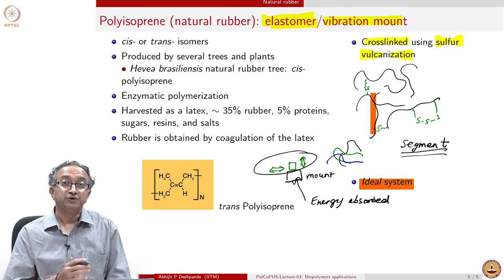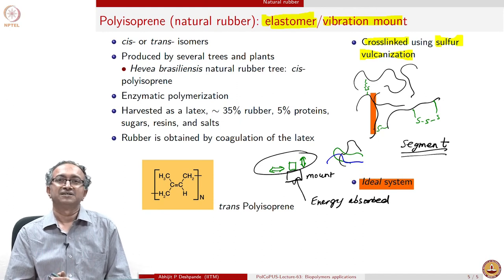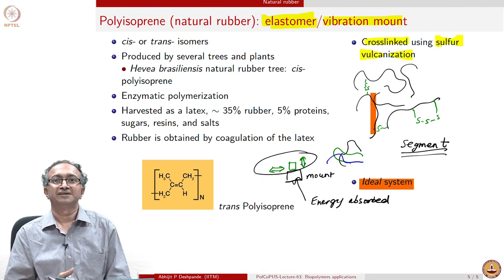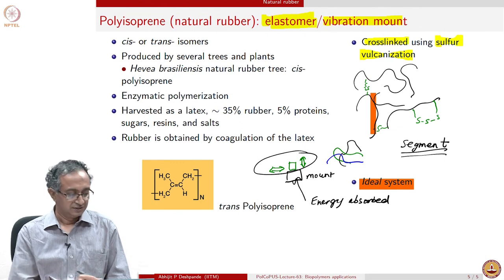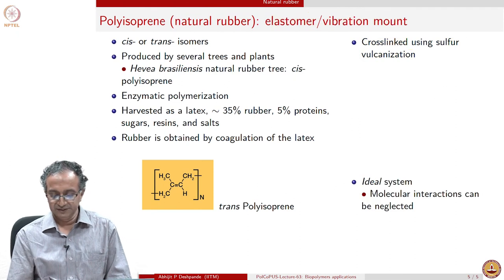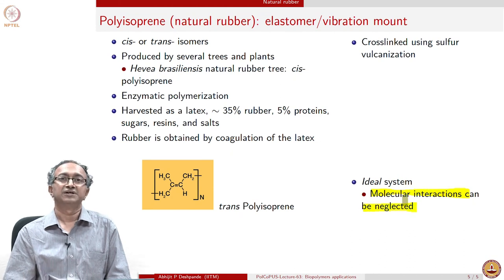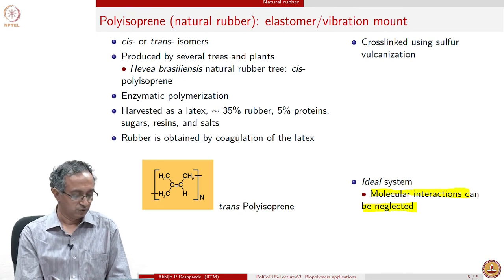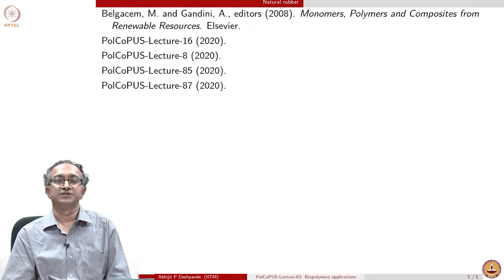We have seen two beautiful examples of biopolymers: xanthan gum, where molecular interactions are everything, and rubber, where molecular interactions can be neglected to explain its application properties. An ideal system means molecular interactions can be neglected, which is what we did in explaining the elastomeric and vibration mount properties of rubber. With this we close the lecture on biopolymers.